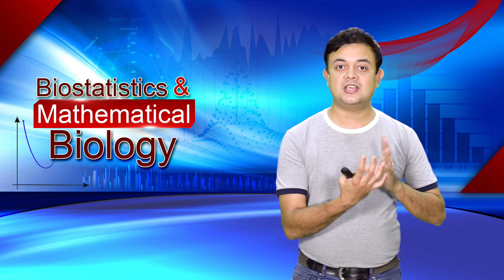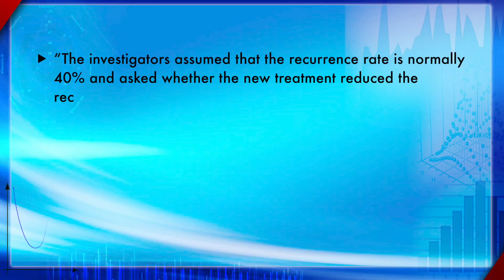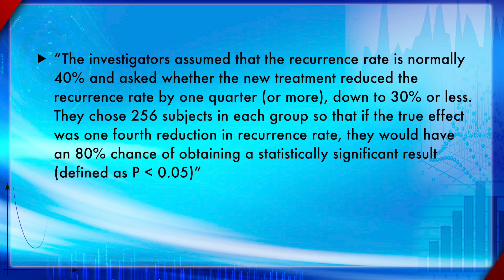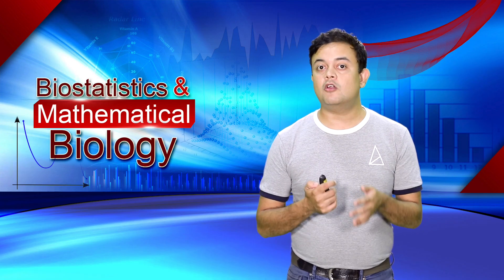We can rewrite the same statement in a more legible manner: 'The investigators assume that the recurrence rate is normally 40% and asked whether the new treatment reduces the recurrence rate by one quarter or more, down to 30% or less. They chose 256 subjects in each group so that if the true effect was a one-fourth reduction in recurrence rate, they could have an 80% chance of obtaining a statistically significant result, defined as p < 0.05.'